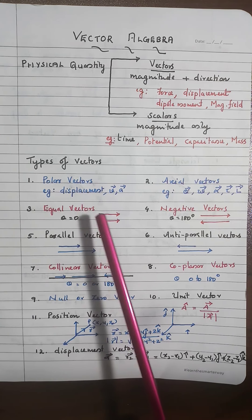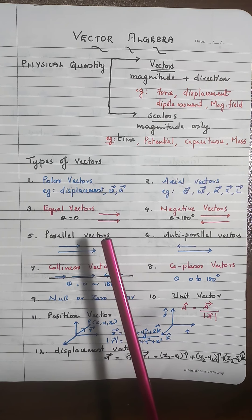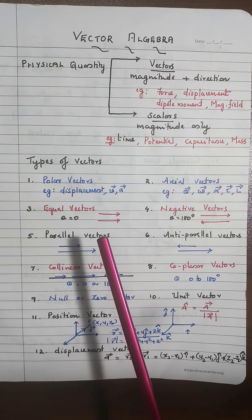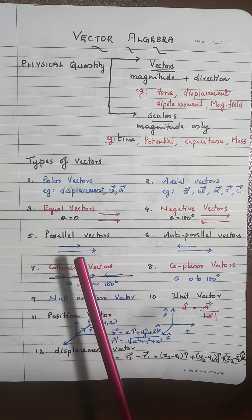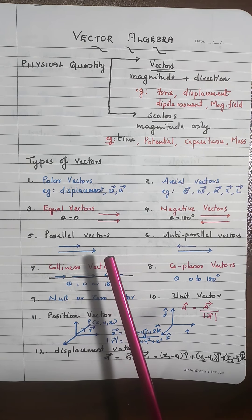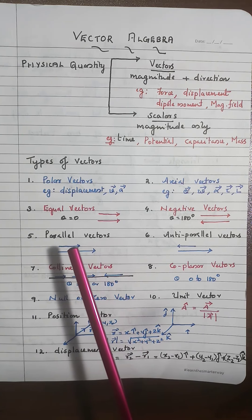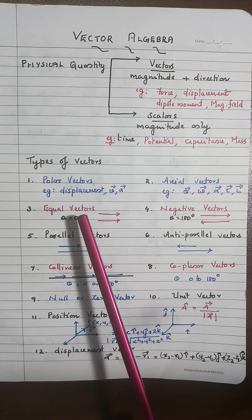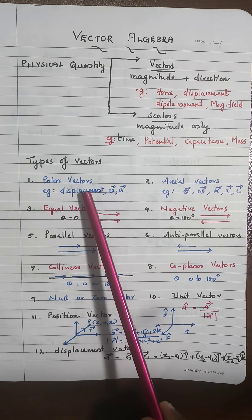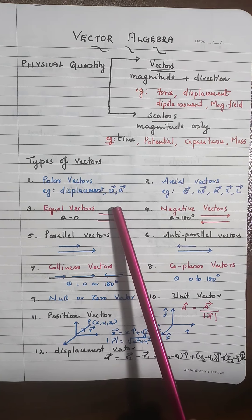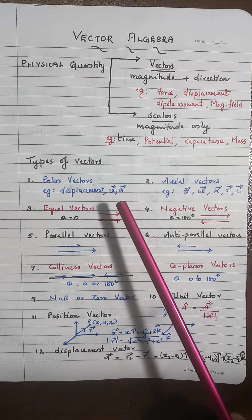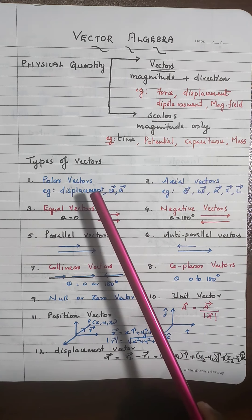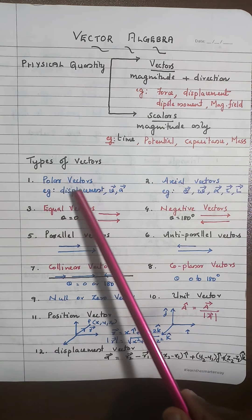Polar vectors are vectors acting along the direction of motion of the body, with a point of application. Examples include displacement, velocity, acceleration, force — all vectors related to linear motion are called polar vectors.